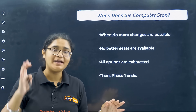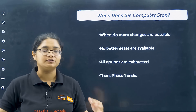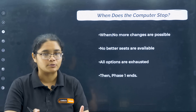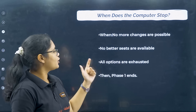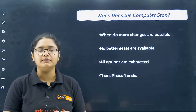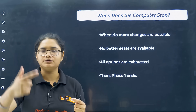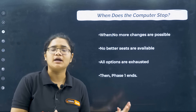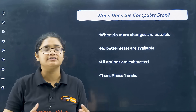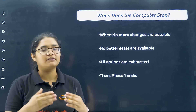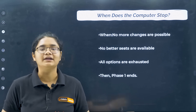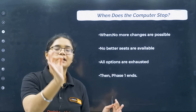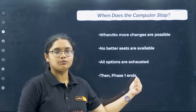The computer stops when no more changes are possible — meaning it has given you the best seat available and there is no possibility of getting a better college. It also stops when all options are exhausted. For example, if you gave only 10 options and after multiple iterations none of those colleges could be allotted to you because your rank is too high for all of them, the computer stops allotting. Then phase one ends and phase two begins.